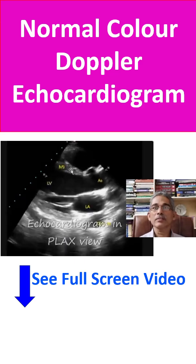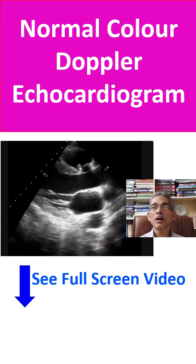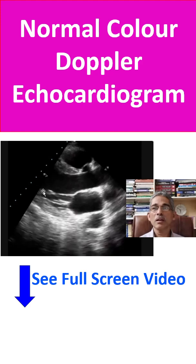This is the interventricular septum, right ventricular outflow tract and anterior surface of the right ventricle, the tricuspid valve, and the position of the transducer will be here. This is the aorta, the aortic valve is in the open position, left atrium, mitral valve is in the closed position, and this is the posterior wall of the left ventricle, papillary muscle, and cross section of the descending aorta.